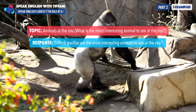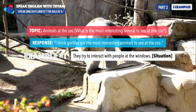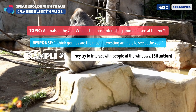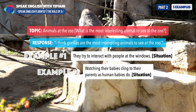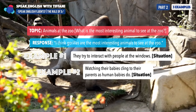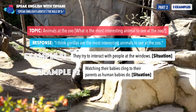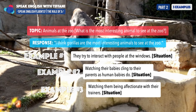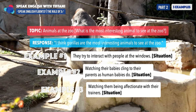So when we look at three examples: example one — gorillas try to interact with people at the windows. Example two — watching their babies cling to their parents as human babies do. And example three — watching them being affectionate with their trainers. So we're giving three examples that support the thought that gorillas are the most interesting animal at the zoo.